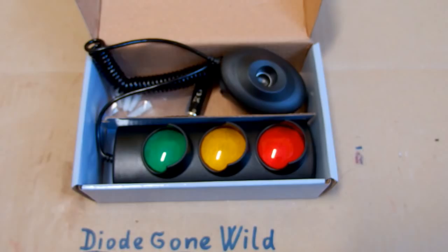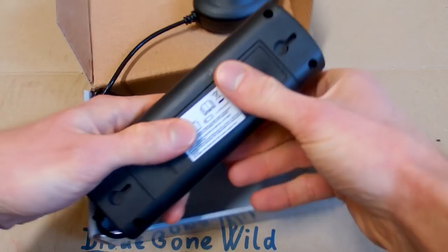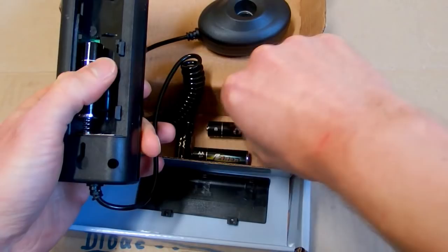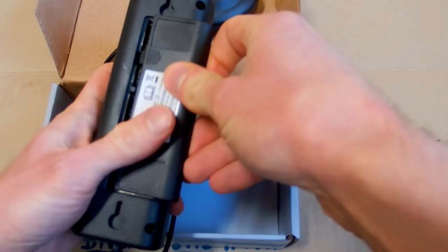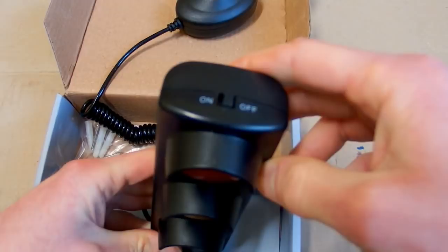So let's try to put the batteries in it. There is a battery space for four double A batteries. Let's put the cover back. And there is a switch on it. So let's turn it on.